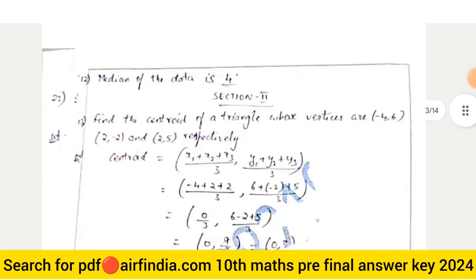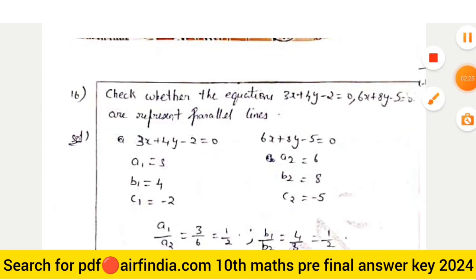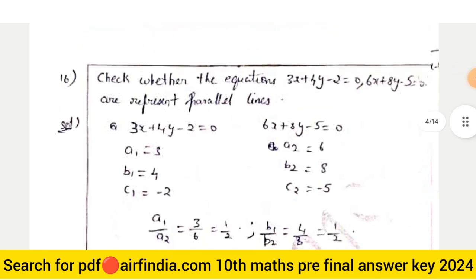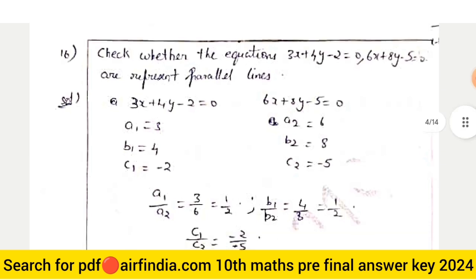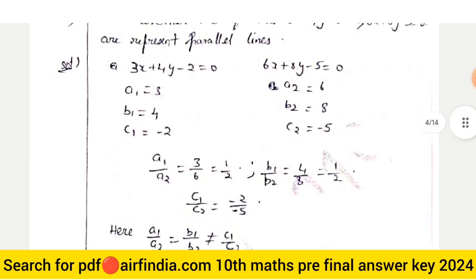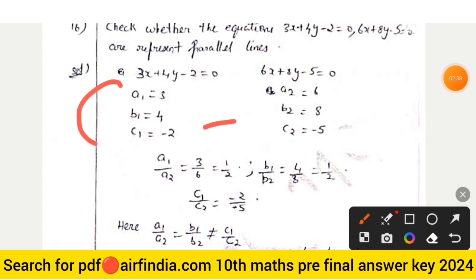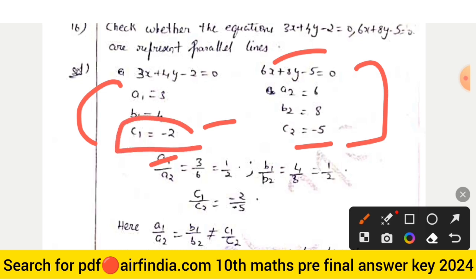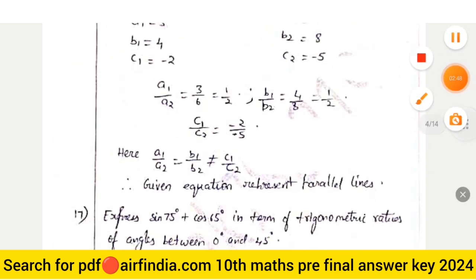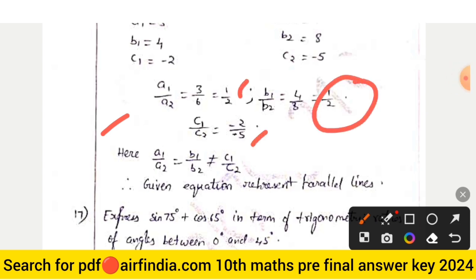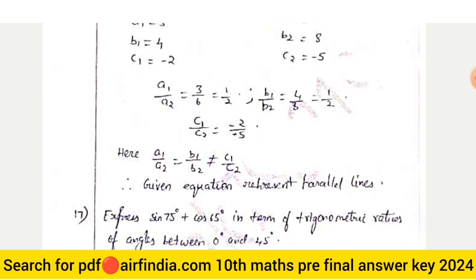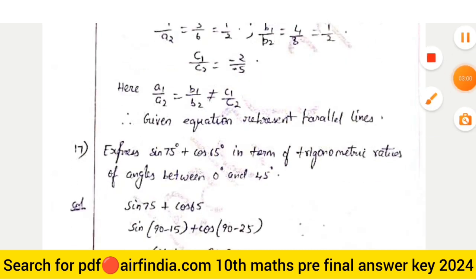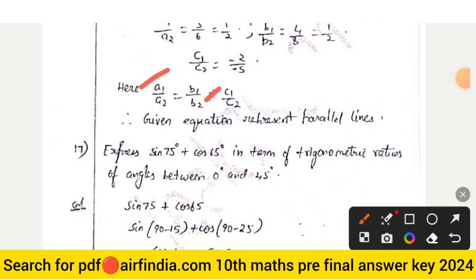This is section two, question number 16: check whether the equations 3x + 4y − 2 = 0 and 6x + 8y − 5 = 0 represent parallel lines. C1 is equal to −2 and C2 is equal to −5. A1/A2 = 3/6 = 1/2; B1/B2 = 1/2; C1/C2 = 2/5. Since A1/A2 = B1/B2 ≠ C1/C2, the given equations represent parallel lines.